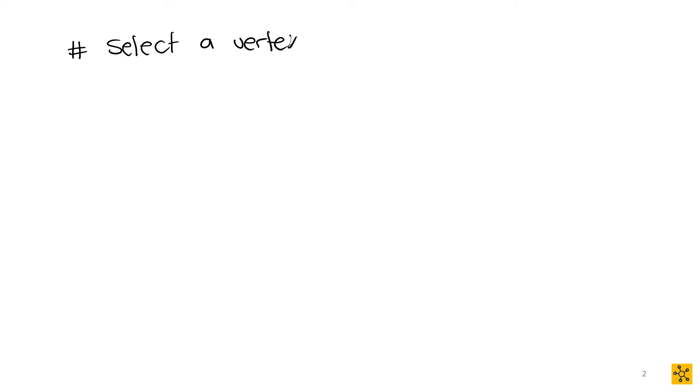So let's first write that process down. We select a node and activate it as our beginning node. In this course you will be told which node to activate, but it also depends on where you're going to be using this. You select a vertex and that becomes your root node and you activate it.